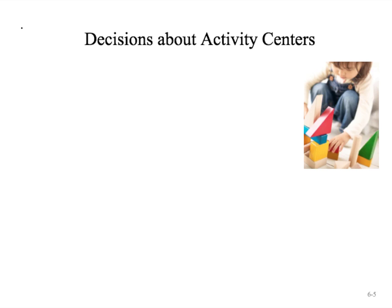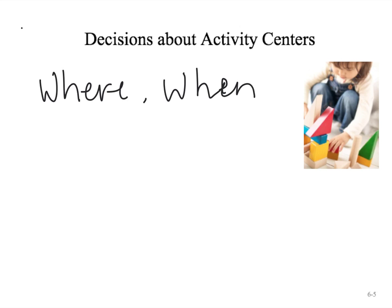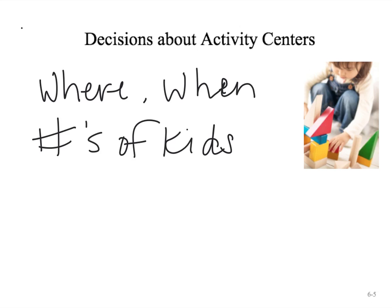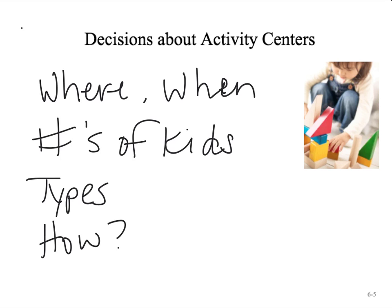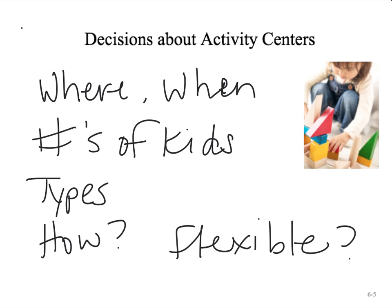Some considerations about activity centers include where they're located, when they're used, the number of kids, the types of centers, how materials are organized, and whether the space is convertible and flexible. For example, if you're in a private preschool at a church where your classroom becomes a Sunday school classroom on Sundays, can you fold your shelves together, flip them around, and hide things? If you have an in-home daycare, you may not want your home to look like a daycare on weekends — so do you have convertible, flexible spaces?